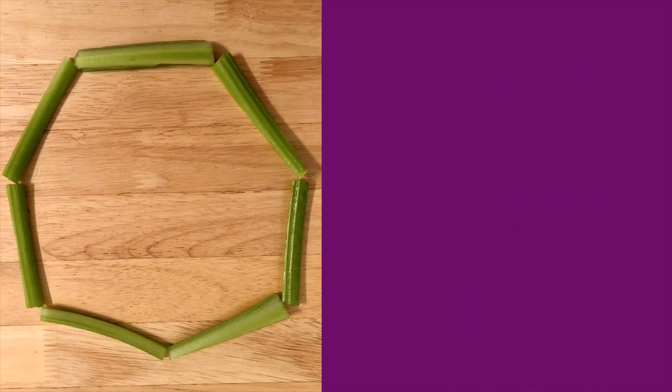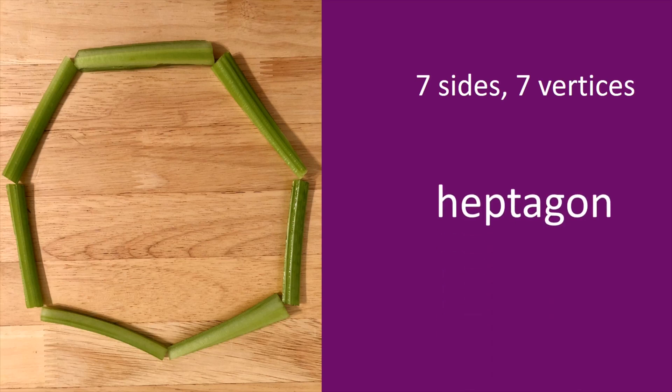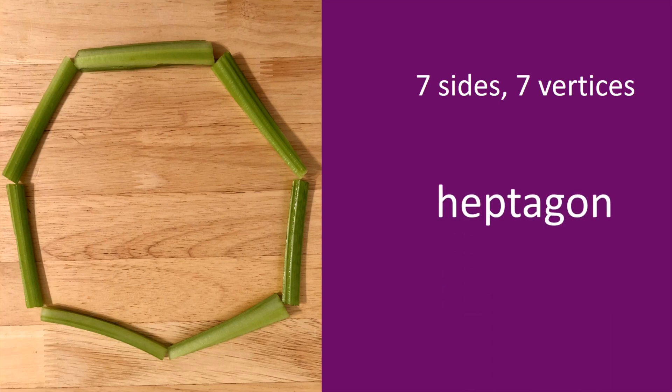Count the sides and vertices. Seven sides, seven vertices — what is this polygon called? A heptagon. Count the sides and vertices. Three sides, three vertices — what is this polygon called? A triangle.